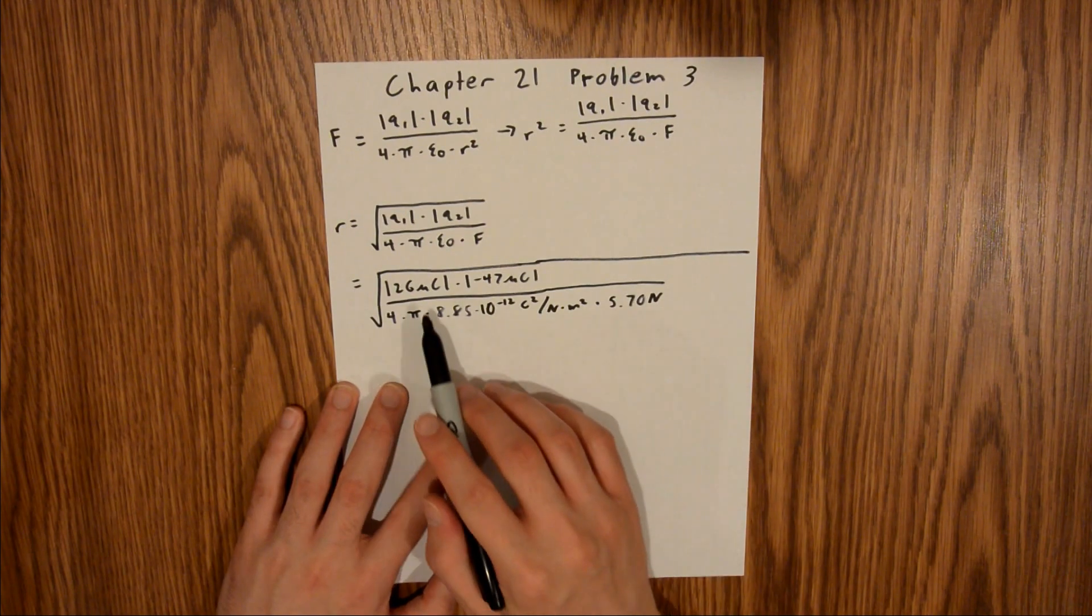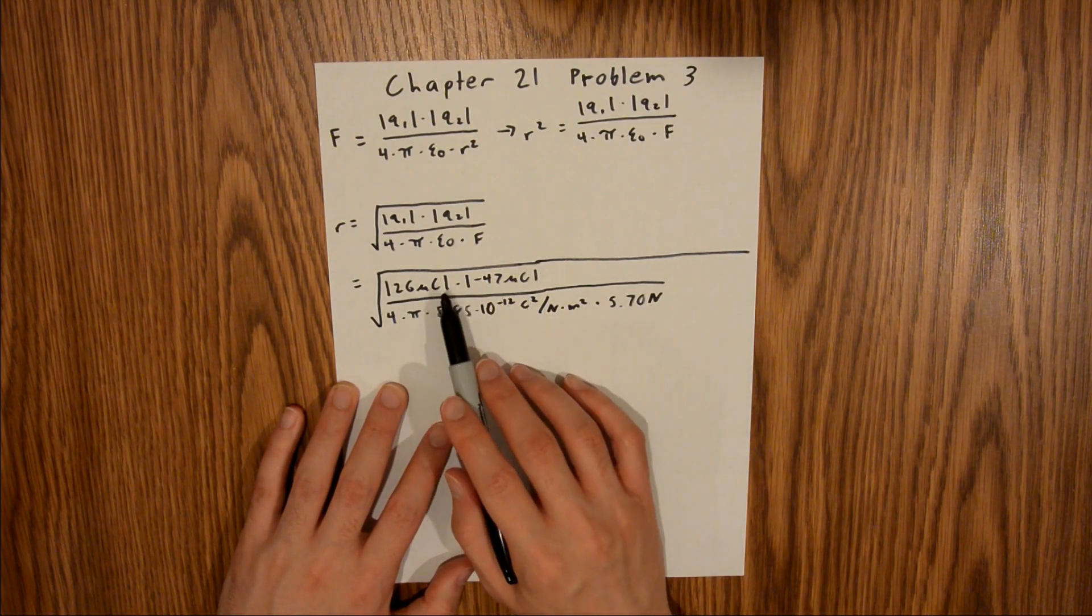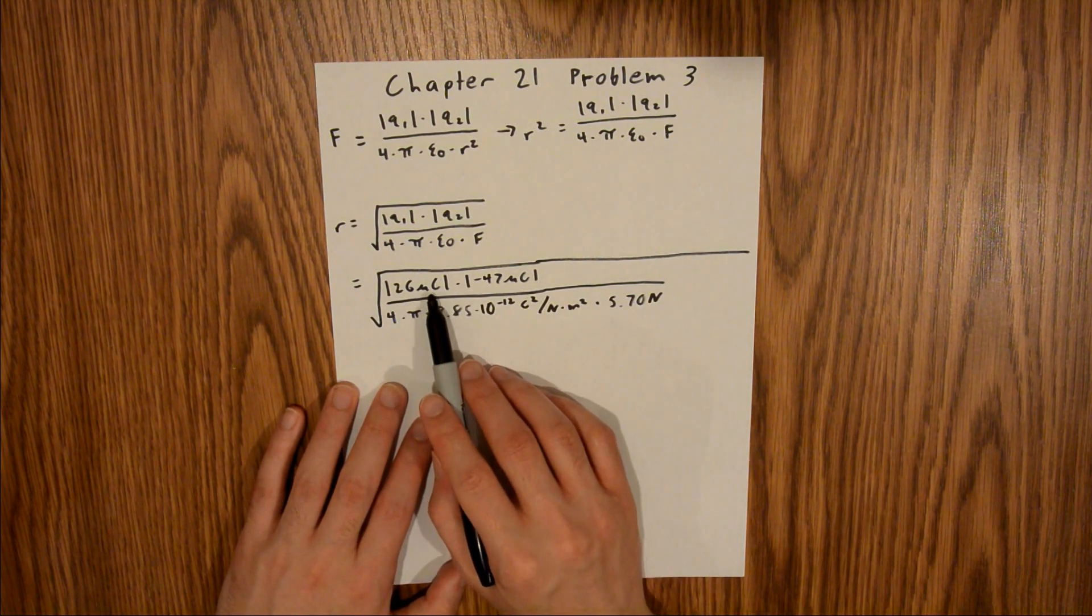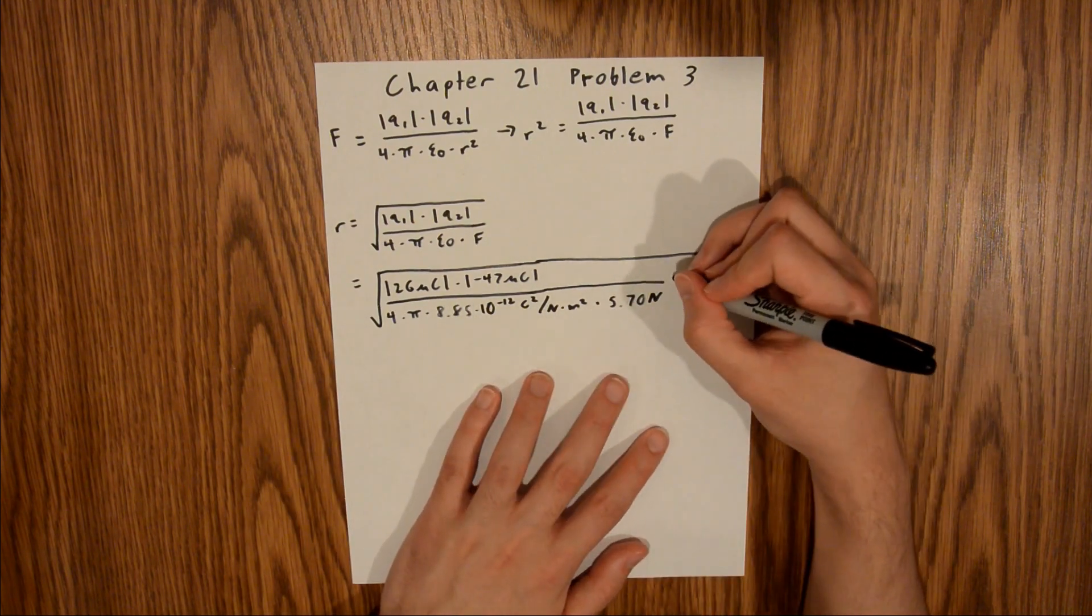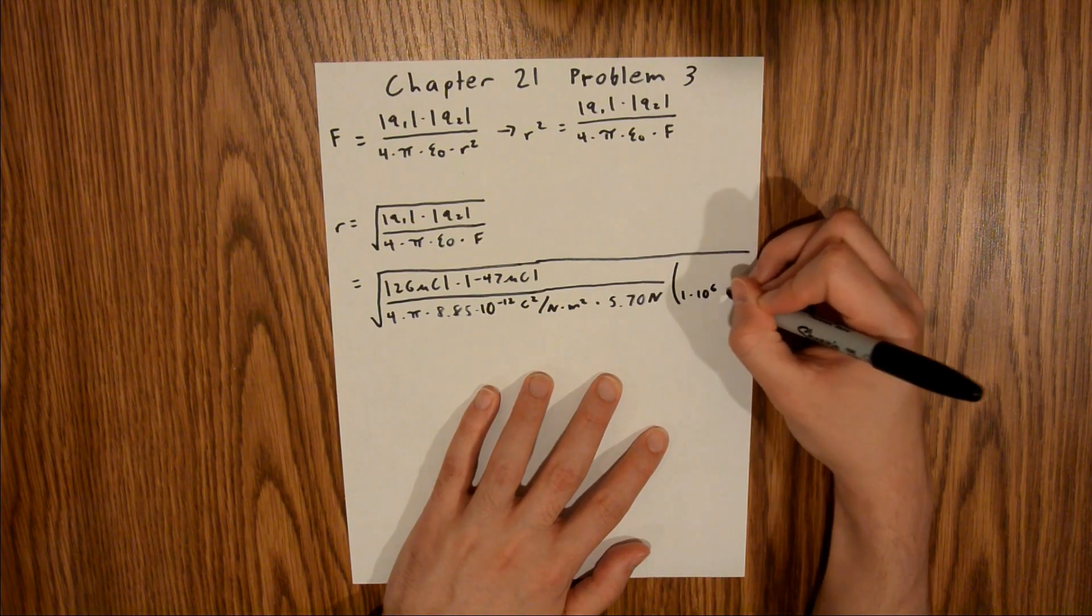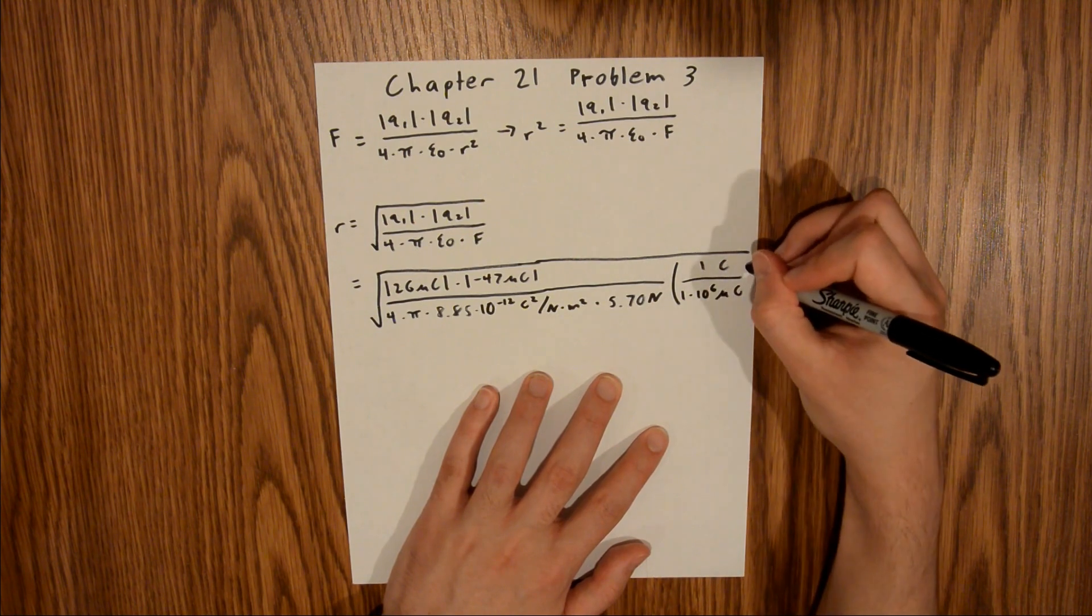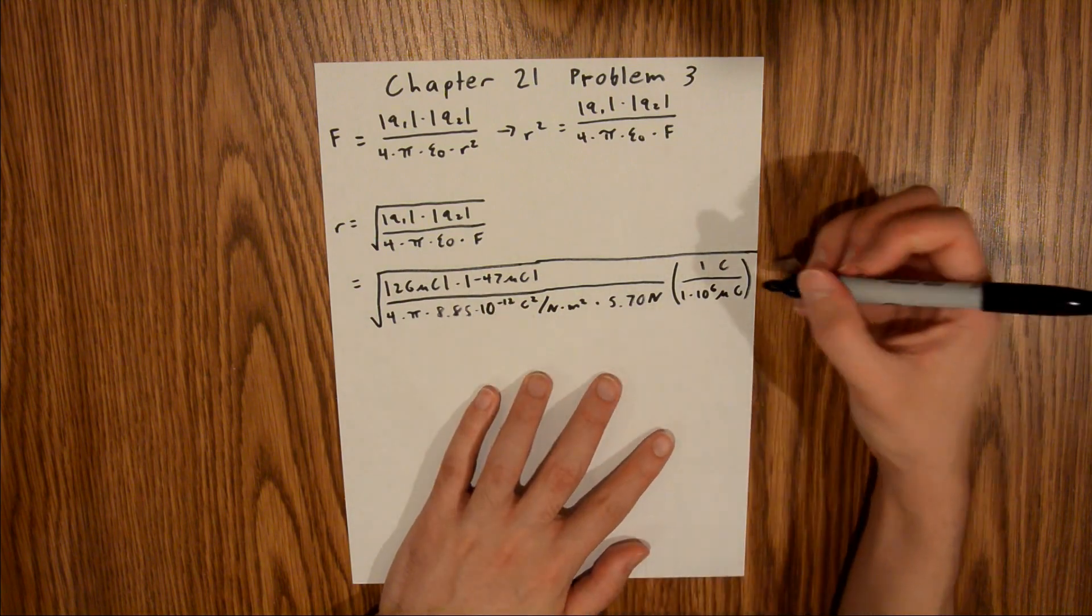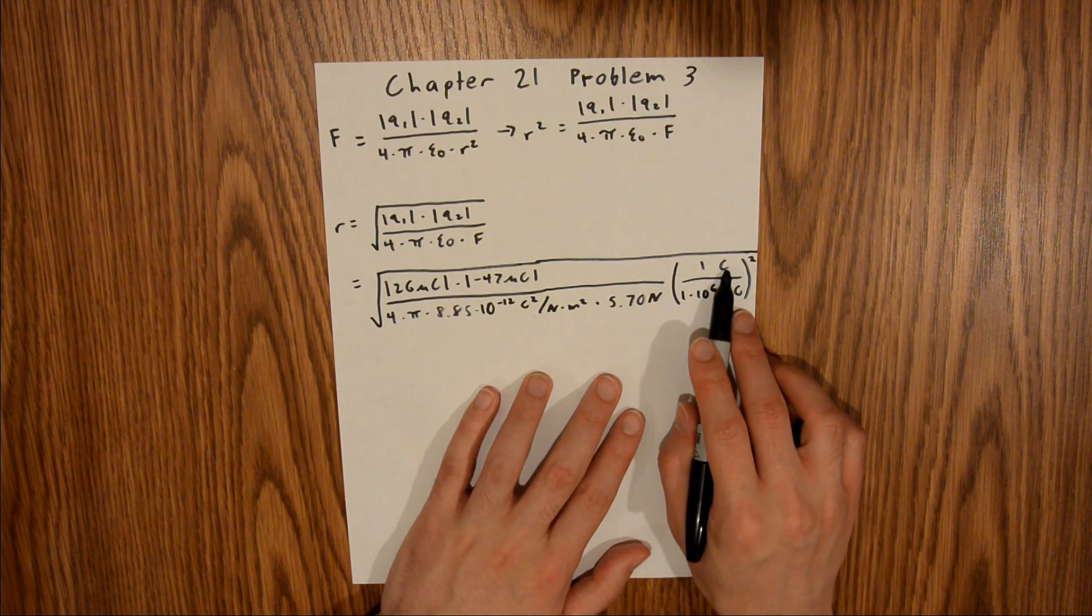One thing we need to consider is we have microcoulombs times microcoulombs, so this is going to be microcoulombs squared, and here we have coulombs squared, so we need to convert these microcoulombs into standard units so they can cancel out with the coulombs. The way we're going to do that is introduce a conversion factor here. There are 1 times 10 to the 6th microcoulombs in 1 coulomb, and since we have microcoulombs squared up top, we need to square this term so we get microcoulombs squared to coulombs squared.